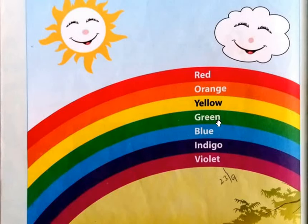Green — G, R, double E, N — green. Blue — B, L, U, E — blue. Indigo — I, N, D, I, G, O — indigo.